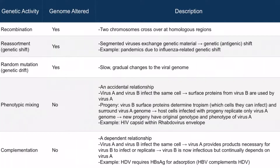Returning to our table and looking at reassortment or genetic shift — has the genome been altered? The answer is yes. Those segmented viruses have totally reassorted, and that new novel strain can cause pandemics, especially due to flu viruses.